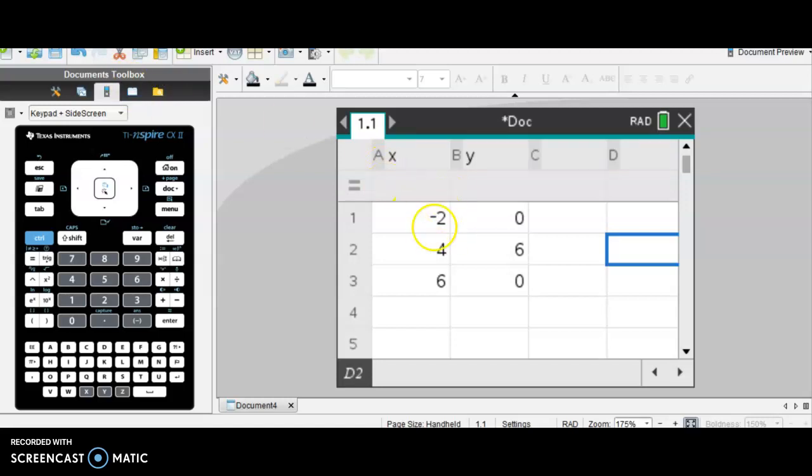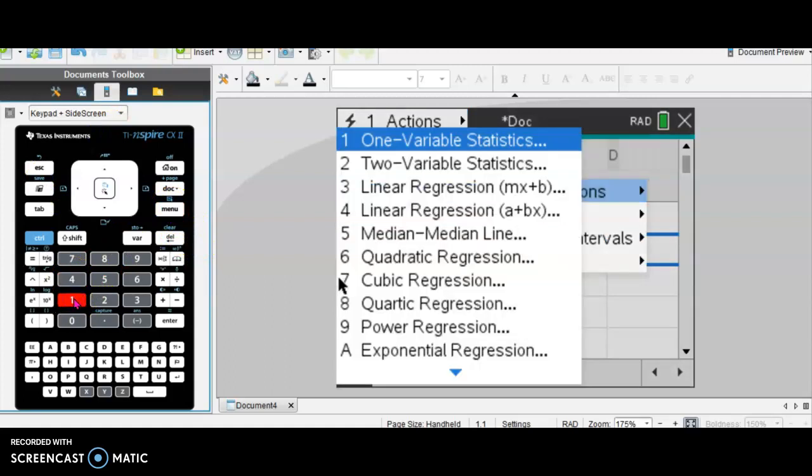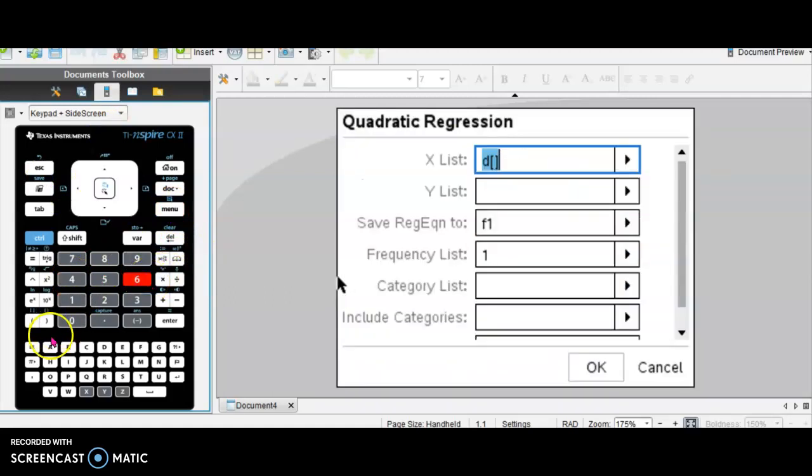Make sure every X, like negative 2, is paired up with the correct Y, 0. That is one point. 4, 6 was a point, and 6, 0 was a point on the graph. Now we're going to hit the same buttons. Menu, 4, 1, and then 6 for quadratic functions. We type in X, and then Y. Hit enter twice.